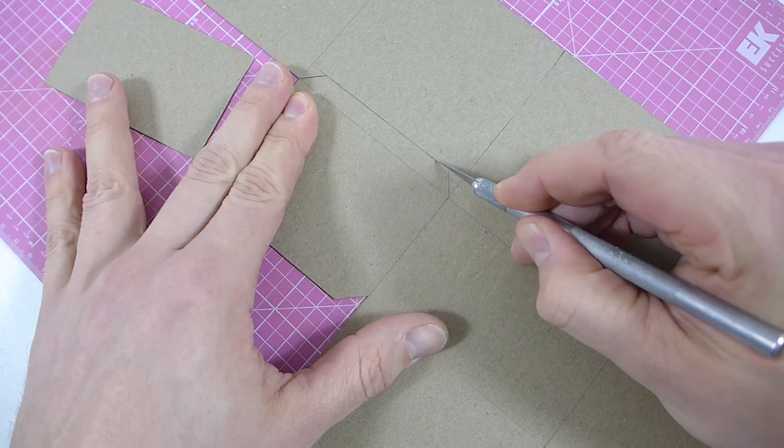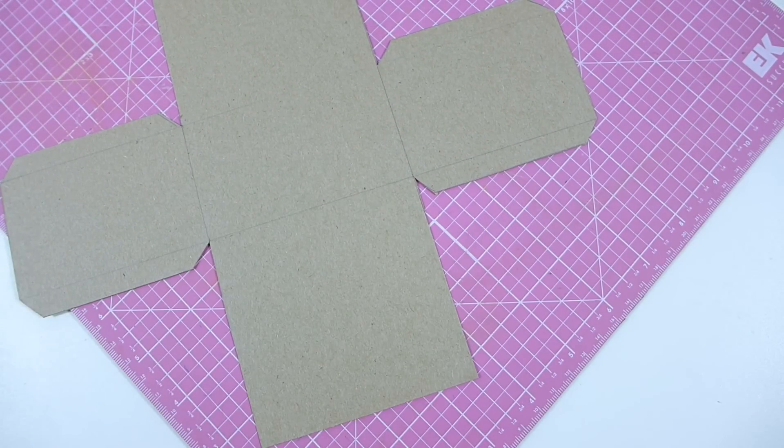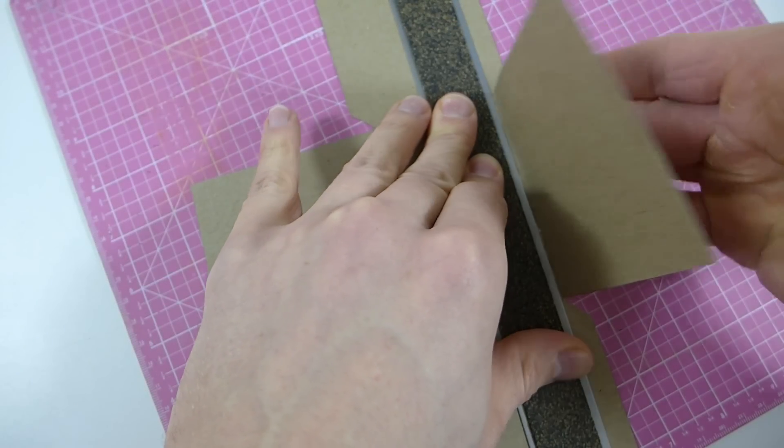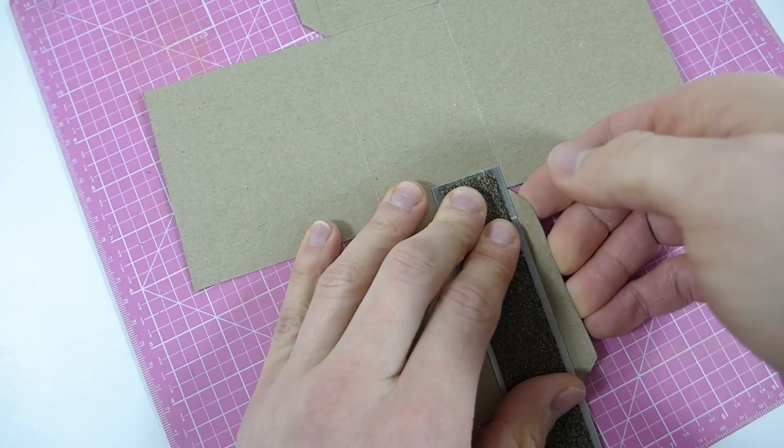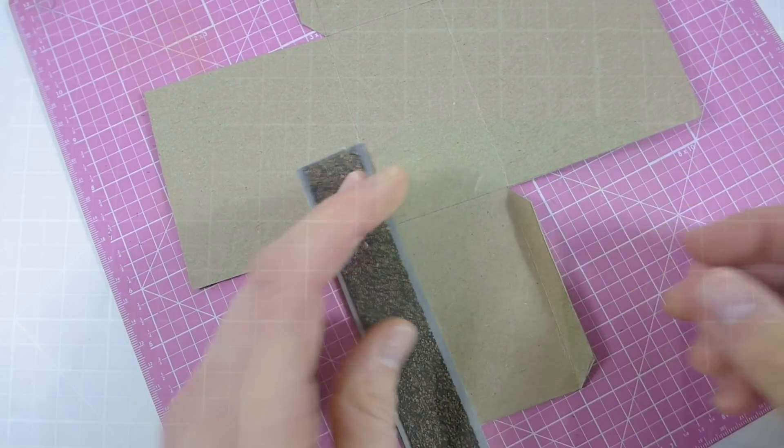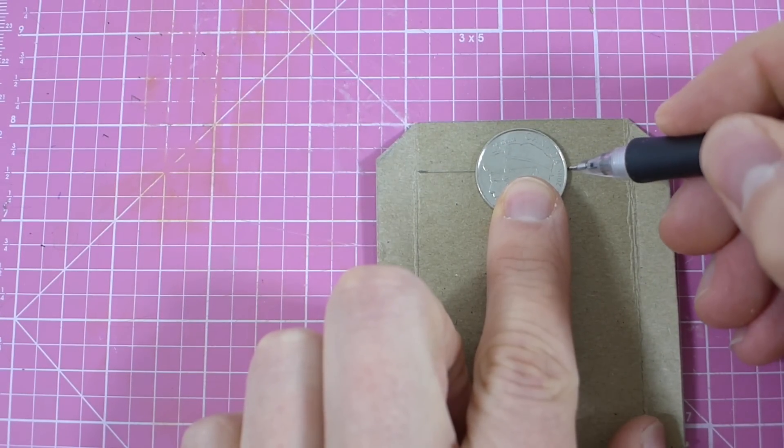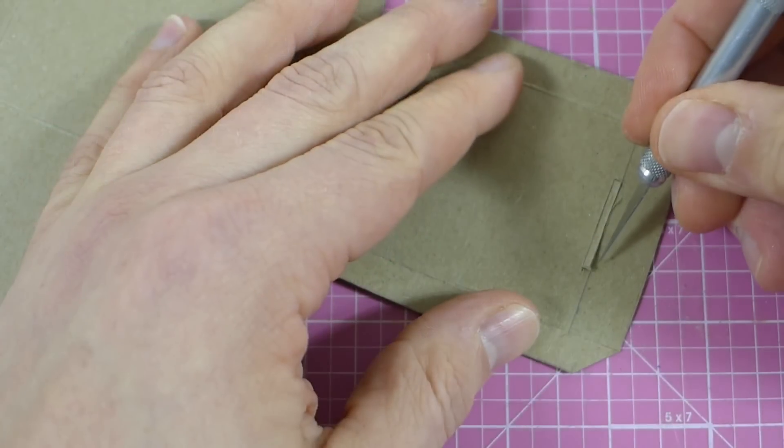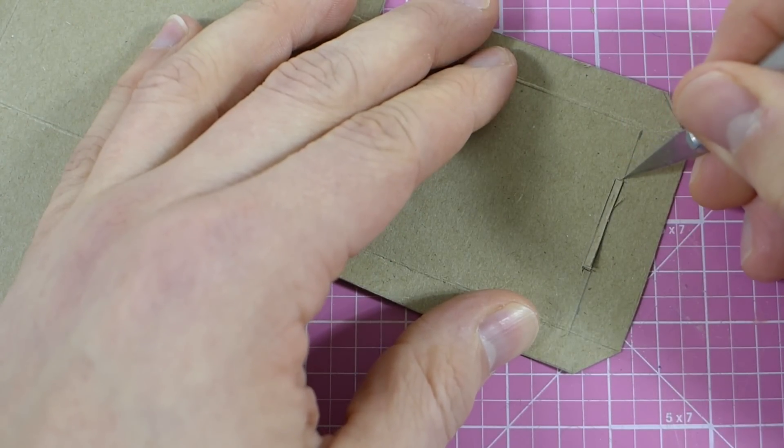Time to cut out our box! Crease all your tabs and flaps. Then cut out your coin slot and coin return hole.